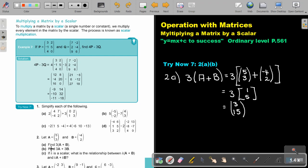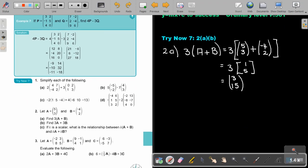Number 2B. Find 3A plus 3B. Let's do substitution. 3A, the matrix is 5 and 3. 3B, the matrix is negative 4 and 2.